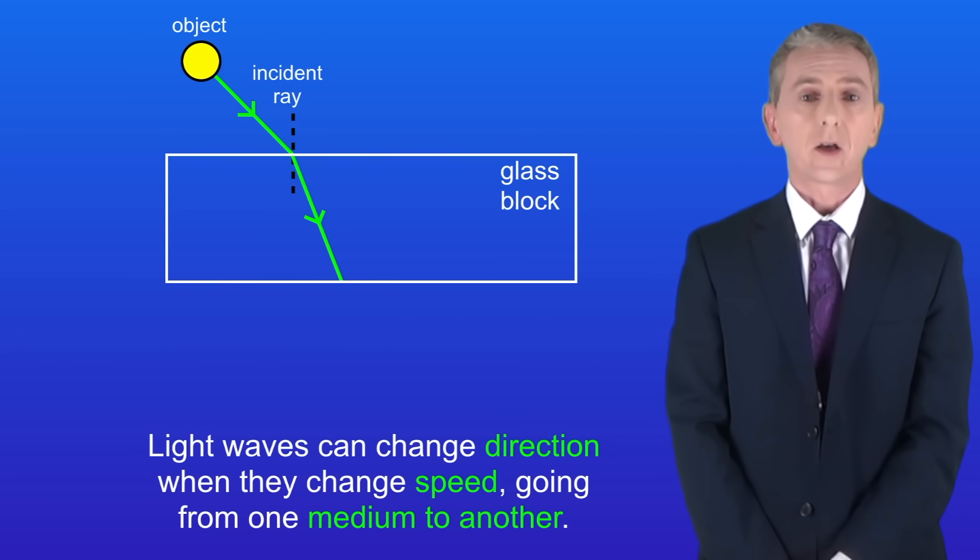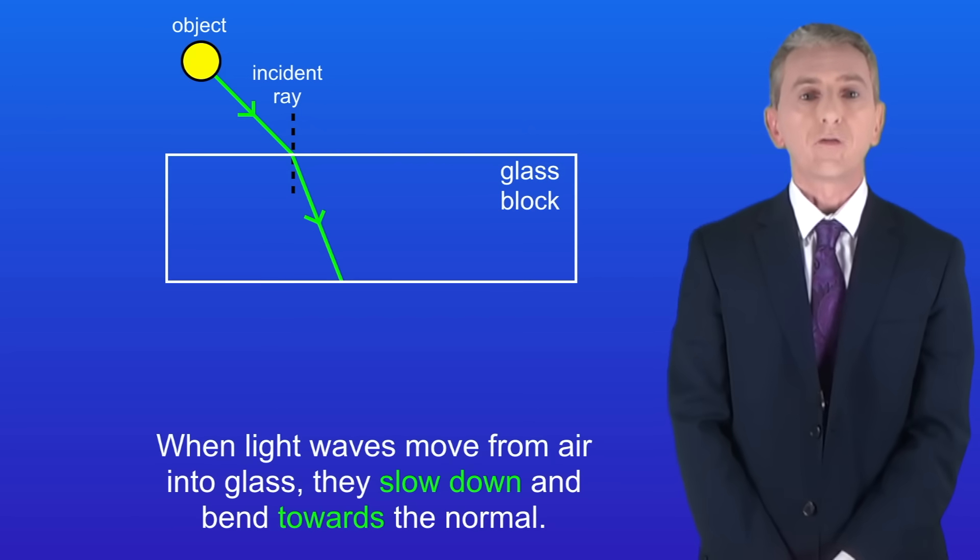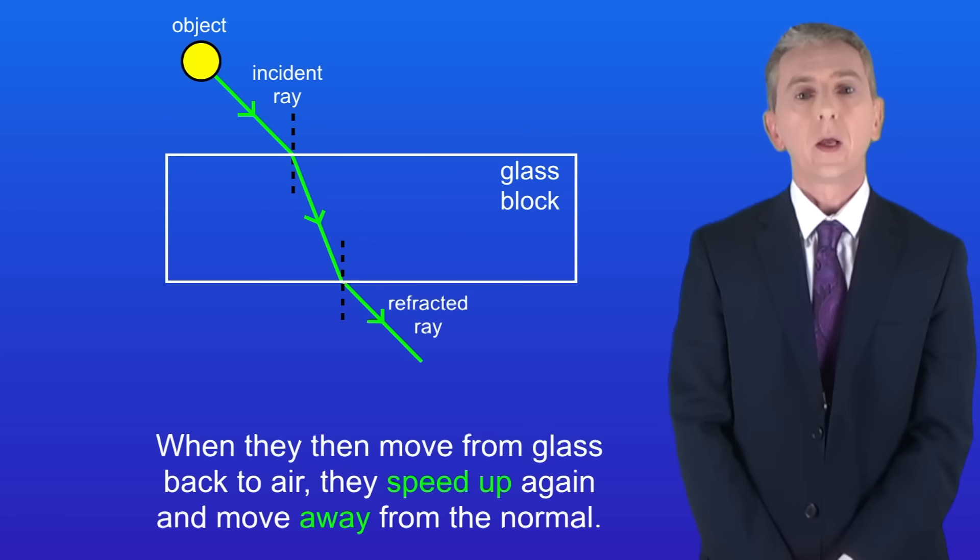In a previous video we looked at the idea of refraction. We saw that light waves can change direction when they change speed, going from one medium to another. When light waves move from air into glass they slow down and bend towards the normal. When they then move from glass back to air they speed up again and move away from the normal.